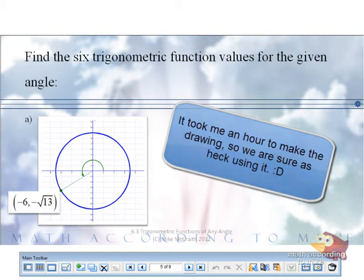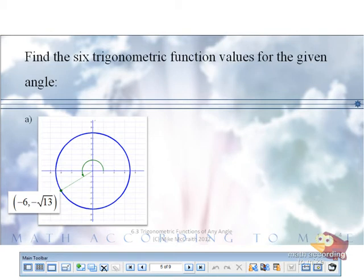All right, so that's another thing to worry about. But by giving you those ordered pairs, negative 6 and negative square root of 13, which of these values did I already give you? These are the x and y, okay?